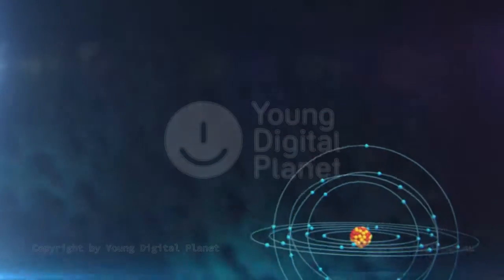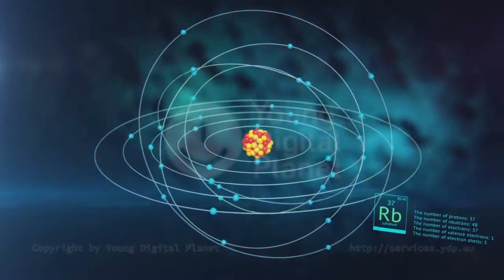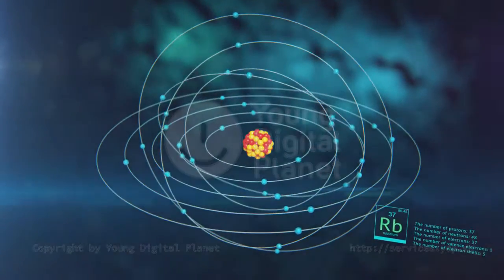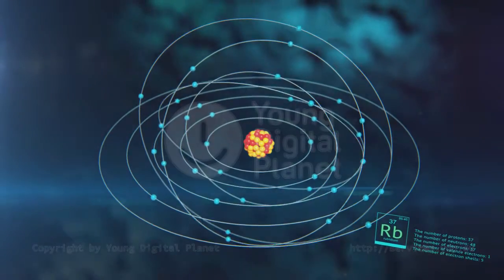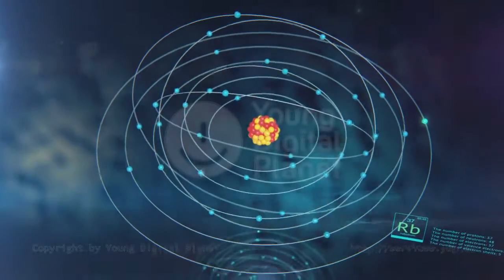In the center of a rubidium atom is a nucleus that consists of thirty-seven protons and forty-eight neutrons. Thirty-seven electrons, one of them being a valence electron, are located on five electron shells.